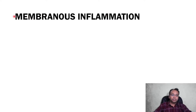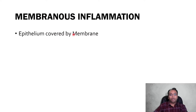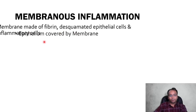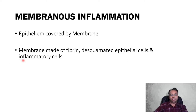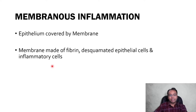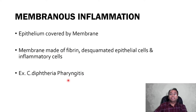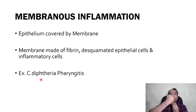Membranous inflammation — the name itself suggests that membrane formation is present. In this type of acute inflammation, a membrane forms which covers the epithelium. The membrane is made up of fibrin, desquamated epithelial cells, and inflammatory cells. The common example is pharyngitis by Clostridium diphtheriae. In diphtheria, if you observe the posterior pharynx, a white membrane coating is present.